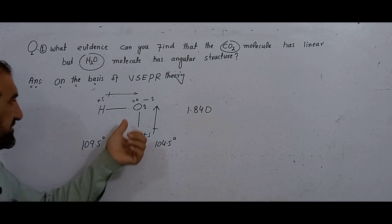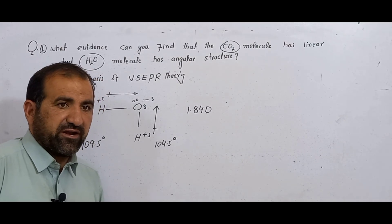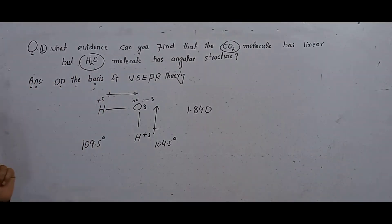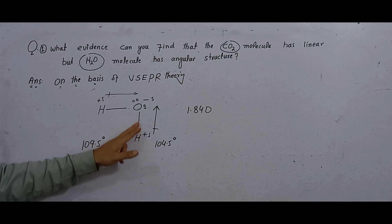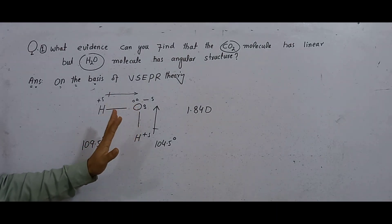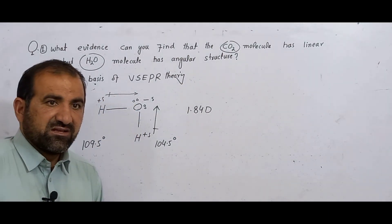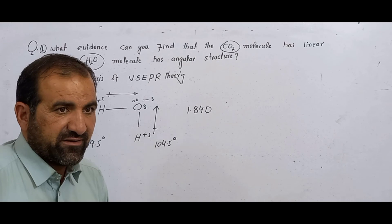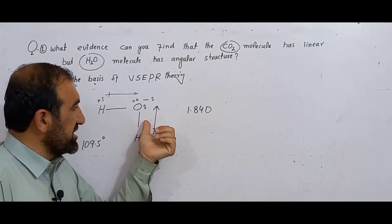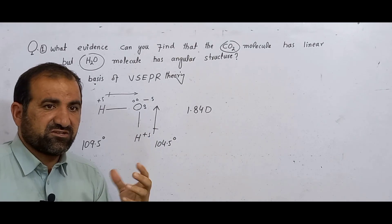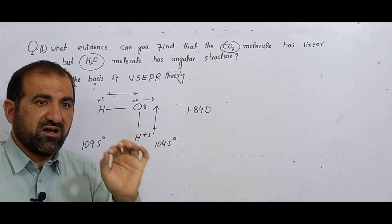It is experimentally found that the dipole moment of water is 1.84 Debye. If we look at the molecule, the bond moment of each O-H bond is the same, but these bond moments are not in opposite directions, so they cannot cancel each other. Therefore, they have a net dipole moment of 1.84 Debye, which means the shape is not linear. The shape is angular, V-shape, or bent — non-linear.